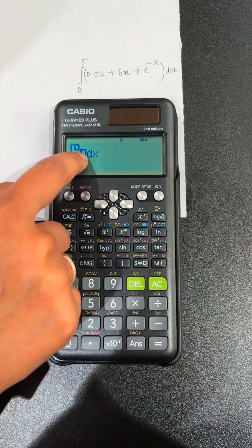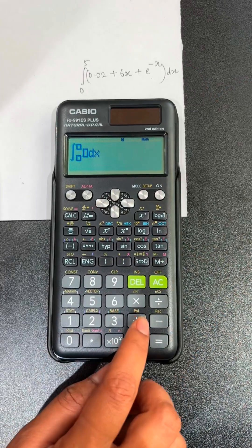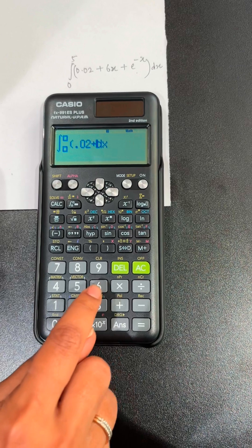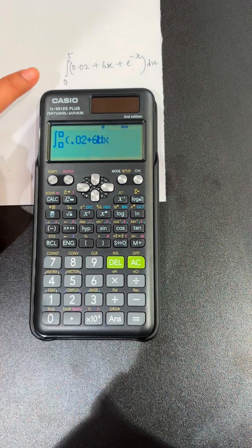Here in the equation part you can start typing in within the brackets 0.02 plus 6. To type x